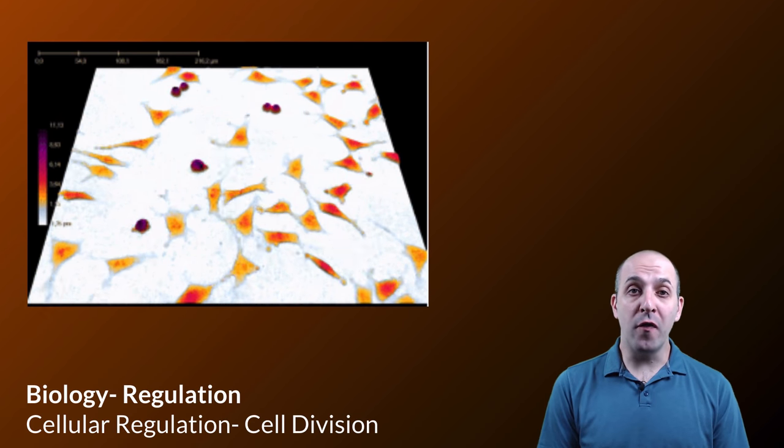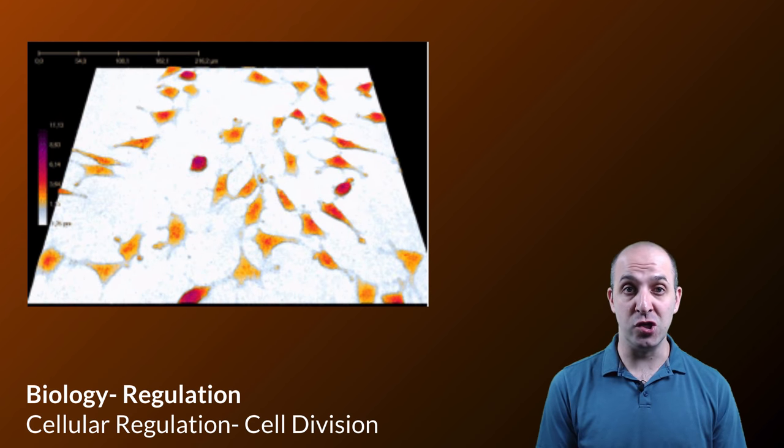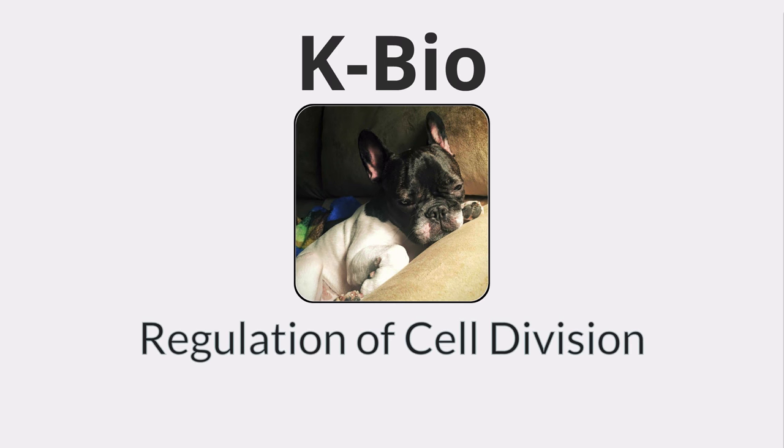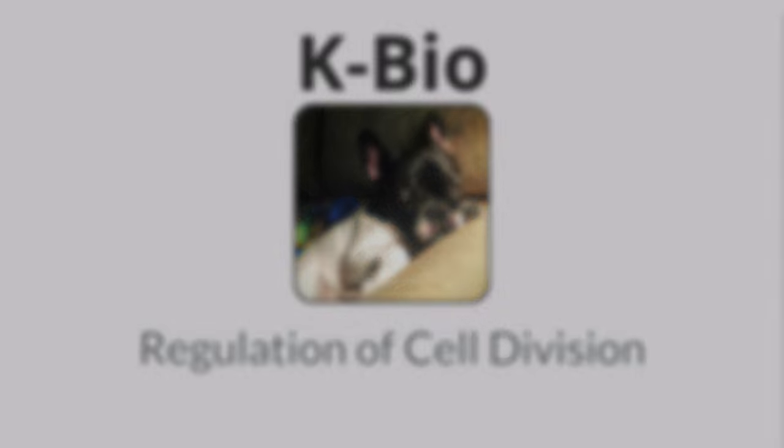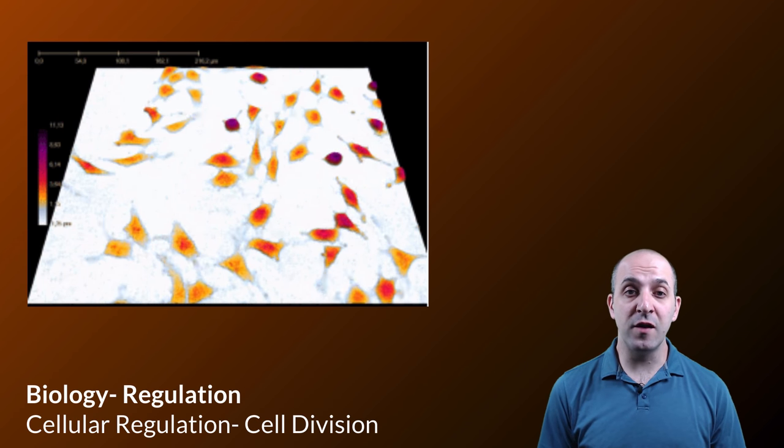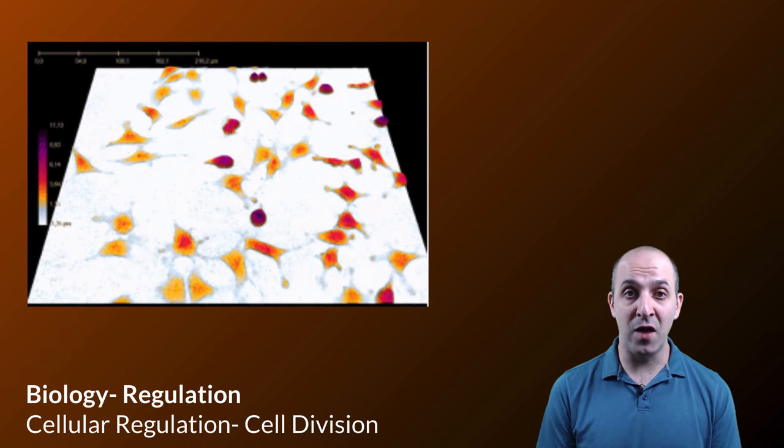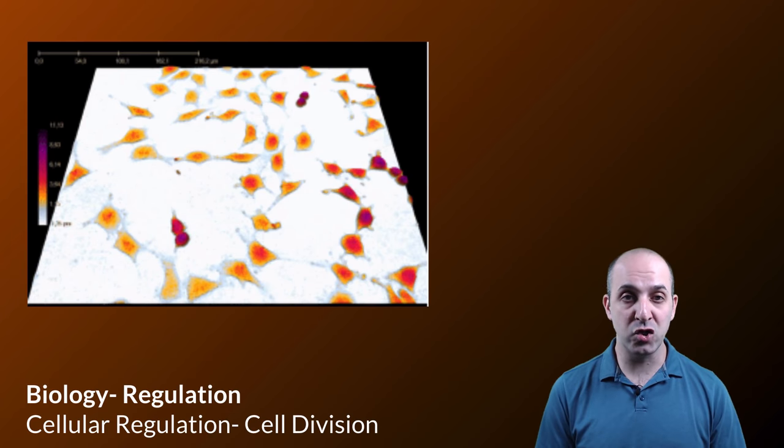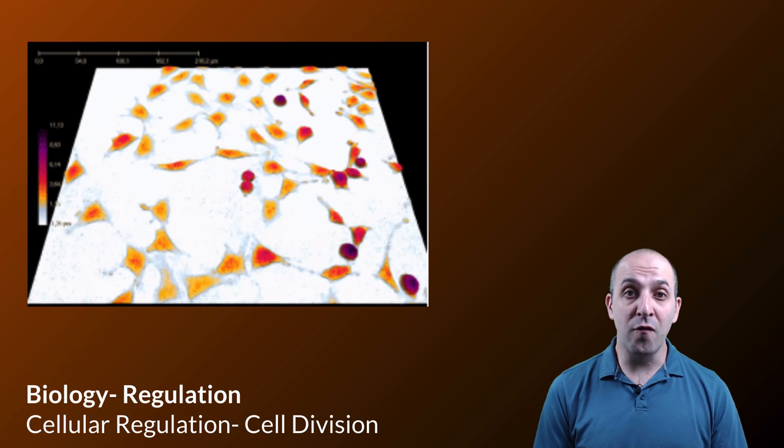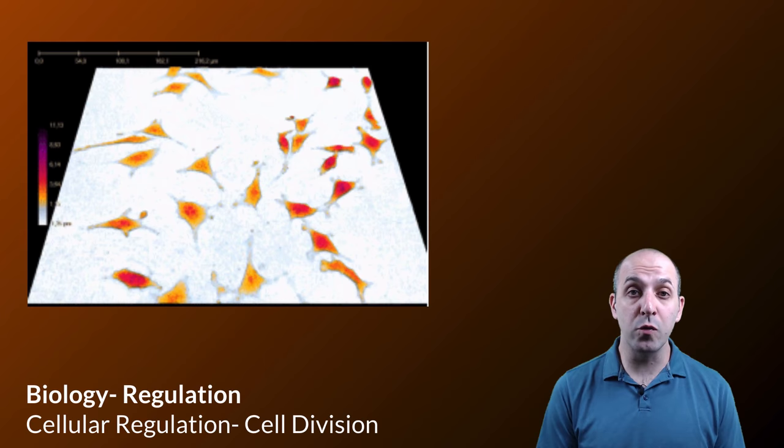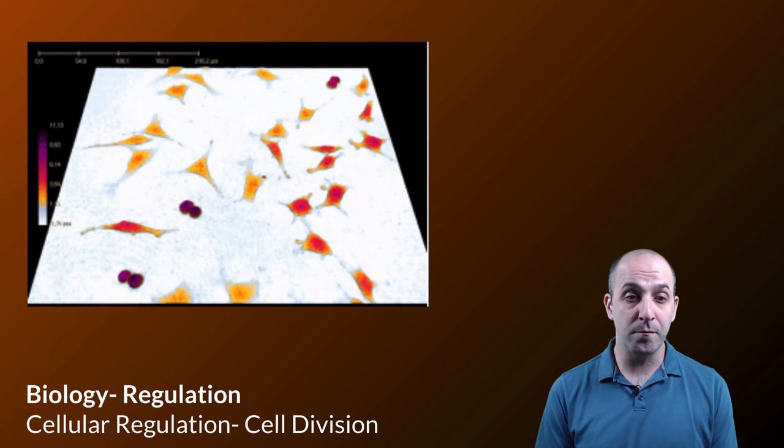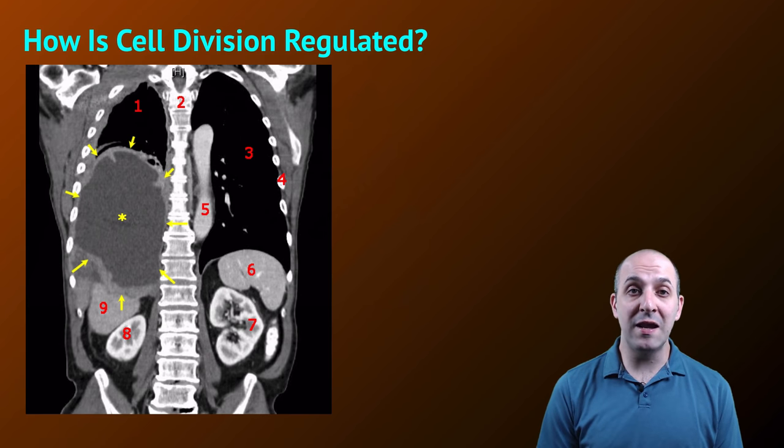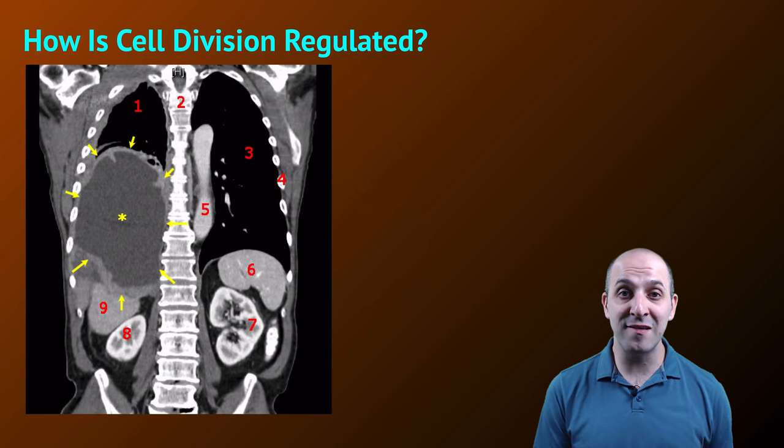Hi, and welcome to our video on the regulation of cell division. In the first video in this unit, we discussed the overall regulatory logic in biological systems. Over the next series of videos, we're going to look at how that regulation plays out at different levels of organization, starting with the level of cells and moving through to the level of the organism. Cell division seemed like a great place to begin. The question that we're going to be answering here is how is cell division regulated?